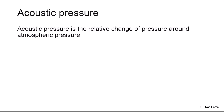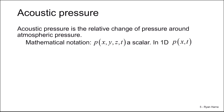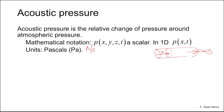Acoustic pressure is the relative change of pressure around atmospheric pressure. The mathematical notation we'll use is p as a function of space x, y, z, and time. We see that it's a scalar — there's no vector quantity with acoustic pressure. In one dimension, for instance in the x direction, the acoustic pressure would just be a function of x and time. This might be the case if we have a long duct that goes on to infinity — the pressure is constant in all cross sections, so we consider this a one-dimensional problem. The units of pressure are pascals, i.e., newtons per meter squared.